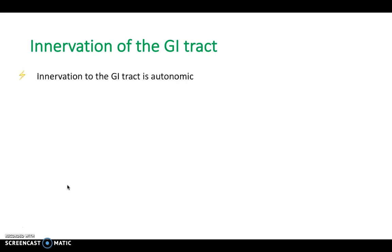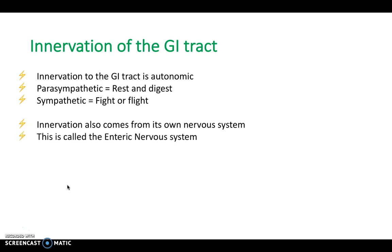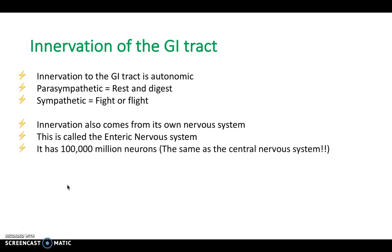The innervation to the GI tract is autonomic, and it has parasympathetic and sympathetic branches. Remember that the parasympathetic is all about rest and digest, and the sympathetic aspect is all about the fight and flight response. Innervation to the GI tract also comes from its own nervous system, called the enteric nervous system. It has 100,000 million neurons — the same number as the central nervous system.